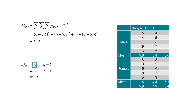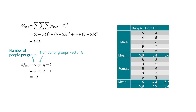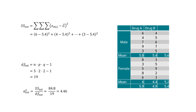The degrees of freedom are given by n times p times q minus 1, where n is the number of people in a group — in our case 5 — and p and q are the number of categories in each factor, both equal to 2. The total variance is calculated by dividing the sum of squares by the degrees of freedom, giving 4.46.